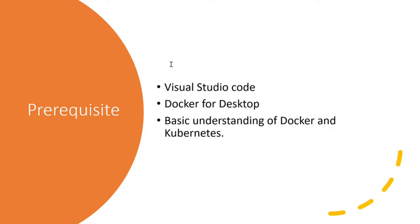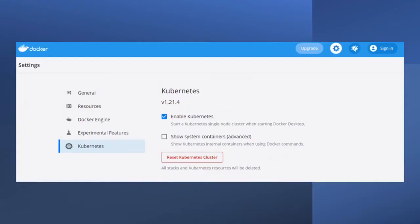These are the pre-requisites for this demo. First, Visual Studio Code for creating the Web API in .NET, and Docker Desktop for containerizing the application and deploying it on a Kubernetes cluster locally. The last one is to have basic understanding of Docker and Kubernetes. Once you install Docker Desktop, make sure to enable the Kubernetes cluster option so that it starts a single node Kubernetes cluster on your machine.